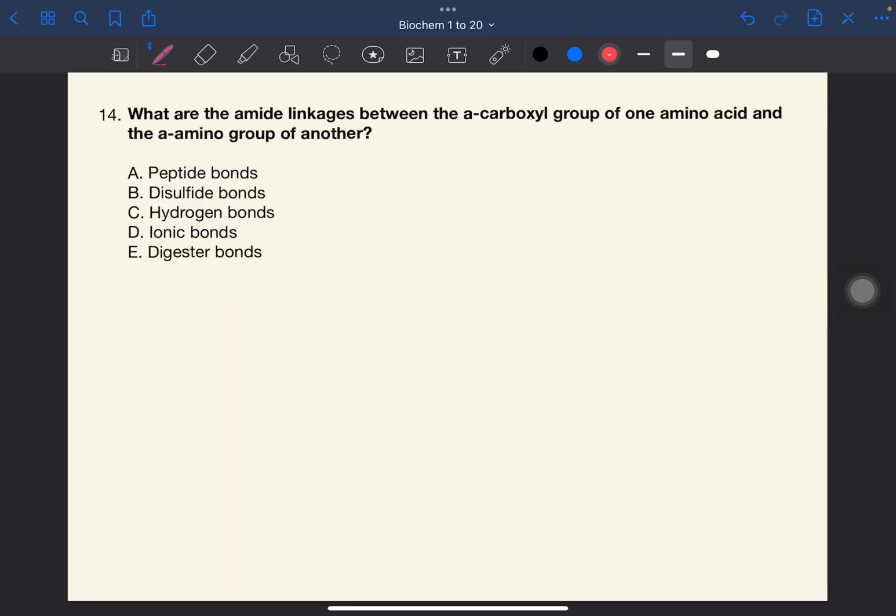Number 14. What are the amide linkages between the alpha carboxyl group of one amino acid and the alpha amino group of another? The answer to this one is A, peptide bonds.